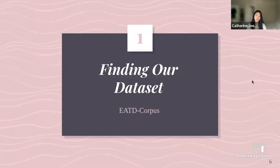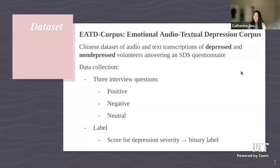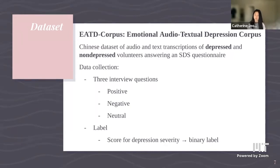We found a dataset called the EATD corpus, which stands for Emotional Audio Textual Depression Corpus, from a Chinese study. This dataset had audio and text transcriptions of depressed and non-depressed volunteers answering a questionnaire commonly used by psychologists to screen for depression. Data collection consisted of three interview questions — positive, negative, and neutral — and collected audio responses. Labels were a depression severity score, which we converted to a binary label: depressed or not depressed.